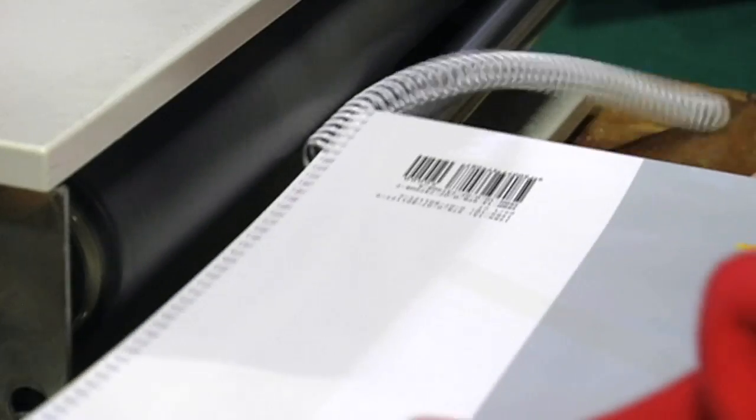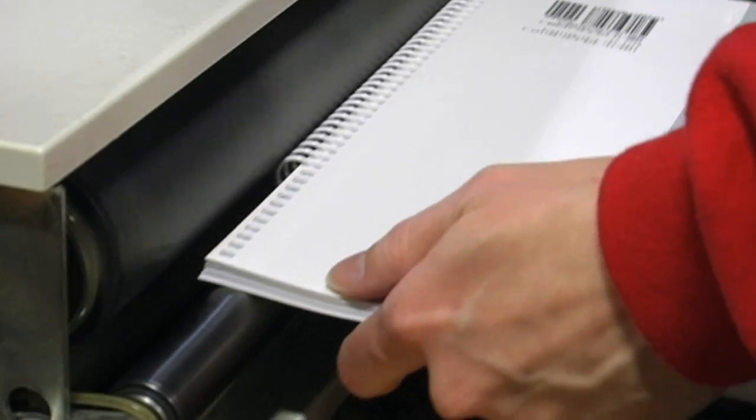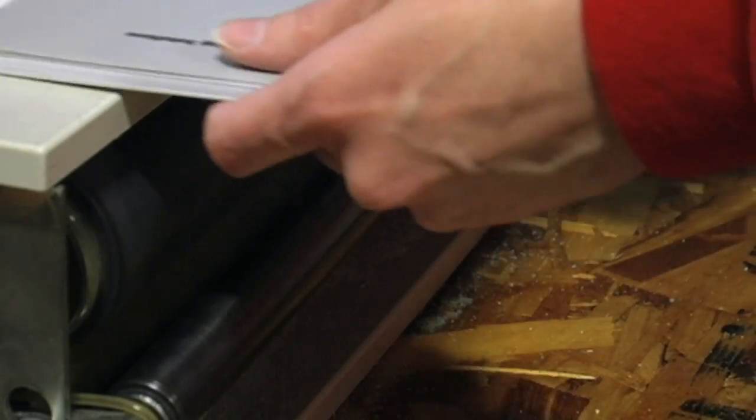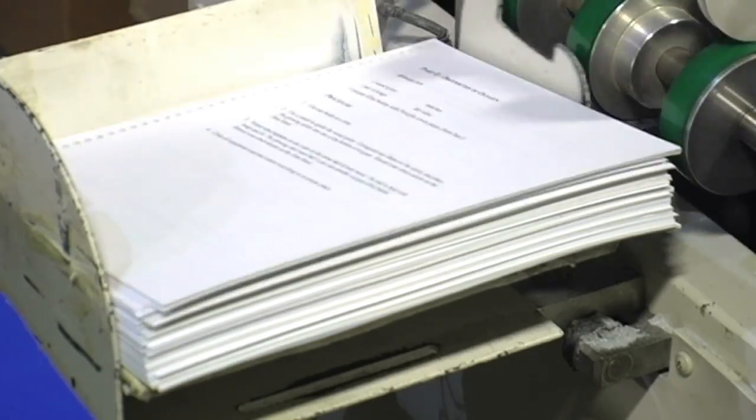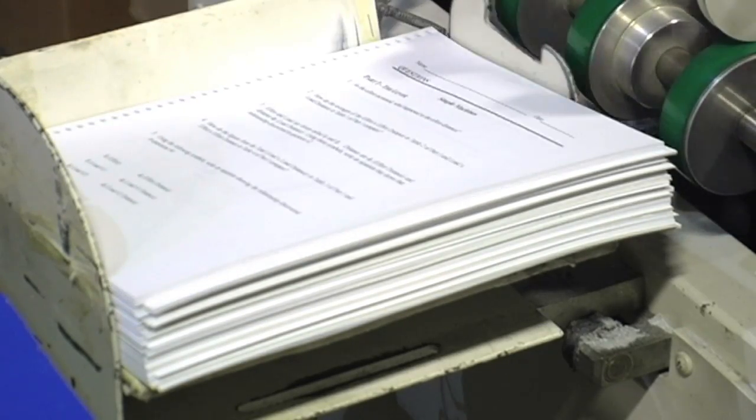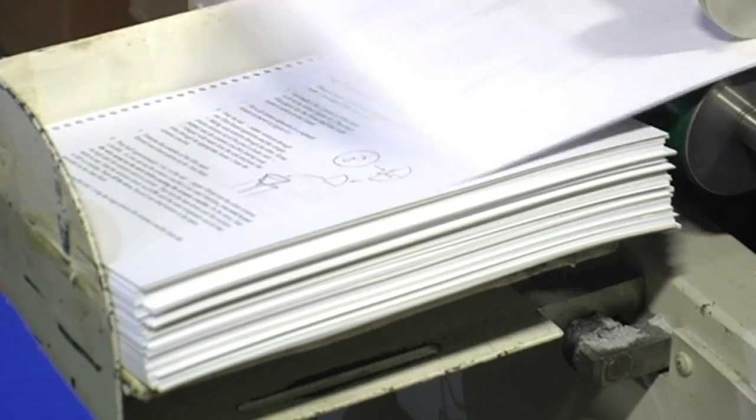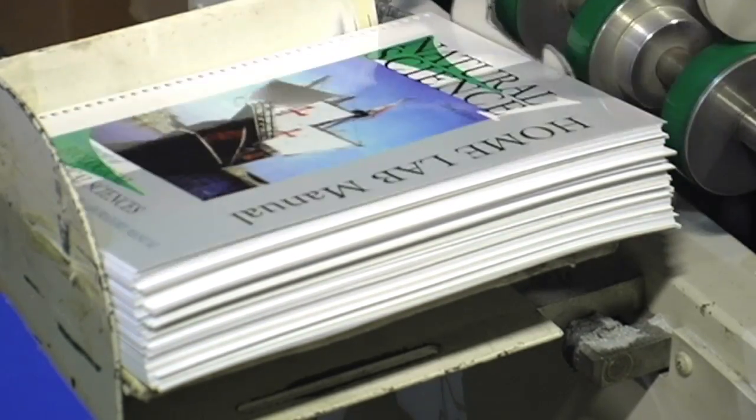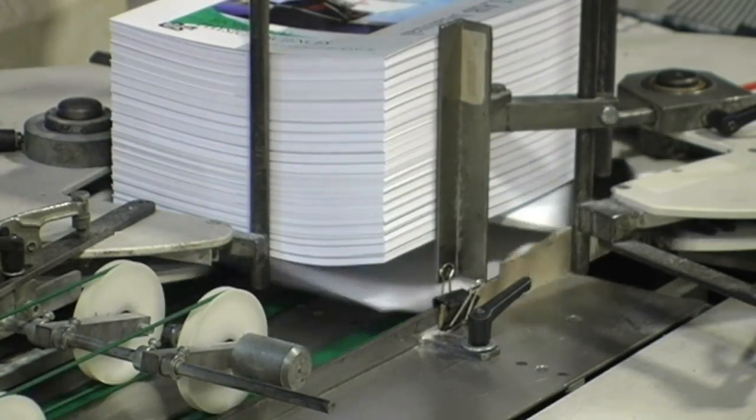Workbooks and notebooks typically use mechanical binding because they need to open flat. The printed sheets are punched with round, oval, or slotted holes on the binding edge. Then wire, plastic coils, or rings are inserted through the holes keeping the book blocks together.